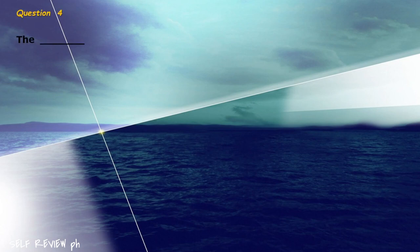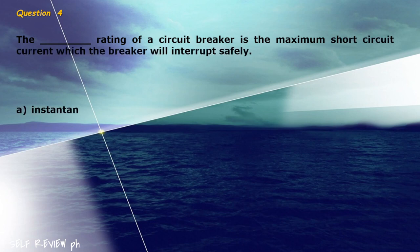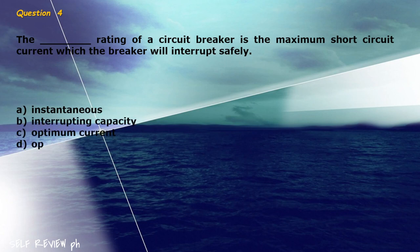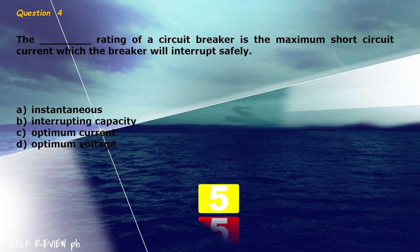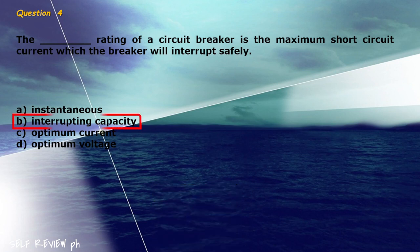Question 4: The blank rating of a circuit breaker is the maximum short circuit current which the breaker will interrupt safely. A) instantaneous, B) interrupting capacity, C) optimum current, D) optimum voltage. The correct answer is letter B, interrupting capacity.